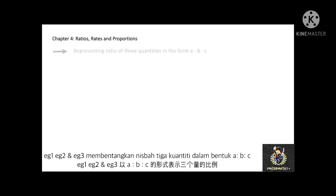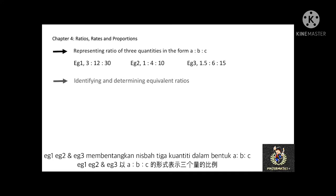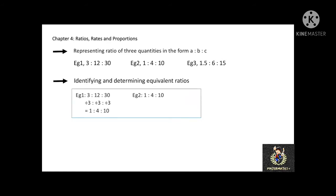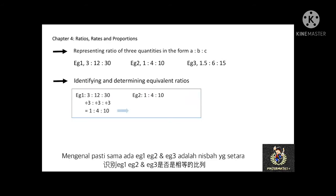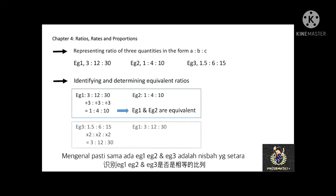Let's review. Representing ratios of three quantities in the form A to B to C: Example 1 is 3 to 12 to 30, Example 2 is 1 to 4 to 10, and Example 3 is 1.5 to 6 to 15. To check for equivalent ratios: the quantities in Example 1 can be divided by 3 to give 1 to 4 to 10, which equals Example 2. Therefore, Example 1 and Example 2 are equivalent ratios.